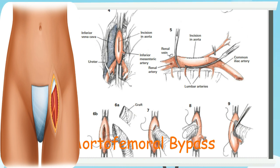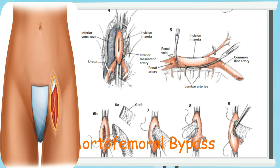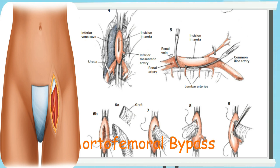A linear arteriotomy is made in the aorta to a point just above the inferior mesenteric artery takeoff, as shown in Figure 5. An attempt is made to preserve that vessel if at all possible. The graft is beveled, Figure 6A, and an end-to-side anastomosis is then created, as shown in Figures 6B, 7, 8, and 9, with a running 000 vascular suture, beginning at the inferior margin of the arteriotomy with a mattress suture. The running suture is carried up each side of the arteriotomy, and the anastomosis is completed in the middle of the arteriotomy on the operator's side.